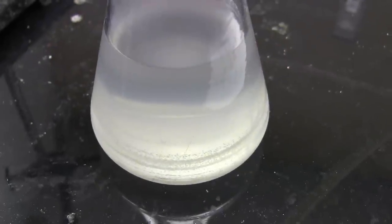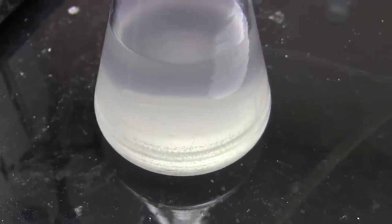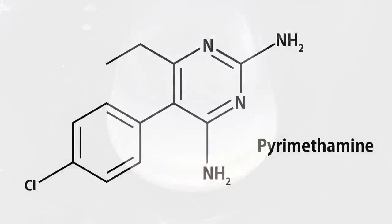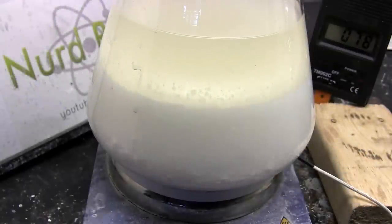Greetings fellow nerds. In this video we're going to make chlorotoluene. This is the first step to making the antiprotozoal drug pyrimethanine. There are a few approaches so I'll show a couple of them here.